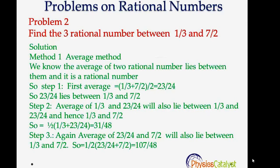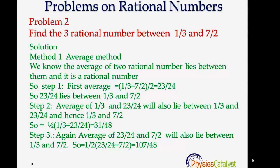Another problem on rational numbers. Find the three rational numbers between 1/3 and 7/2. So here we are trying to find numbers between fractions. So again, the first method is the average method.